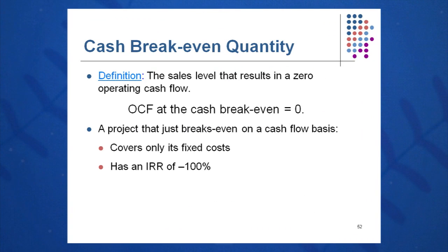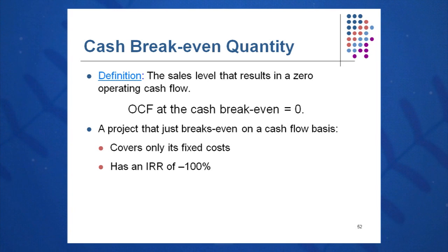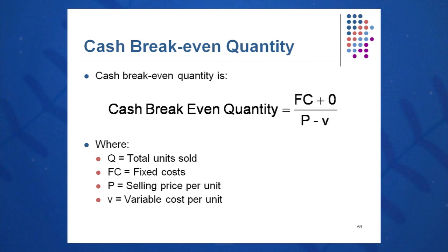The second method is cash breakeven — this is the point where OCF is equal to zero. The general breakeven quantity formula becomes fixed cost plus zero over P minus V. So cash breakeven quantity equals fixed costs divided by contribution margin, since OCF is zero. Here we cover just our fixed costs and the result is an IRR of negative 100%.